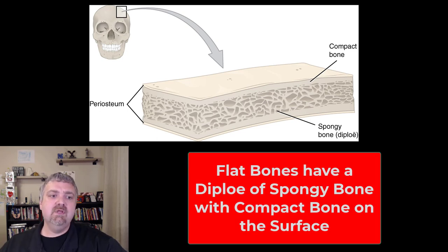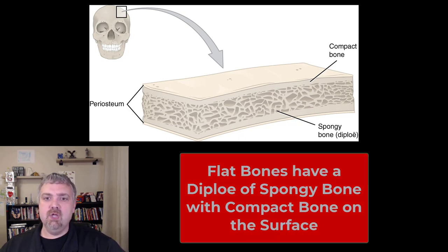Here you see what a typical flat bone would look like. This is the parietal bone of the skull. Notice you have two layers of compact bone, sandwiched between them you have what's called a diploe of spongy bone between the two.